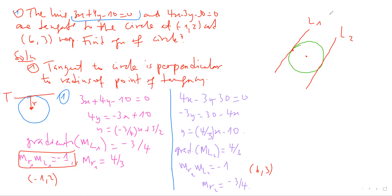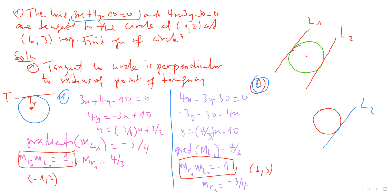Going to Line 2 and making y the subject, we get the gradient of Line 2 as 4 over 3. Since we know the gradient of Line 2, and using perpendicularity, we can write the gradient of radius R2. So the gradient of R2 is perpendicular to the gradient of L2, giving us the gradient of radius R2 as minus 3 over 4.